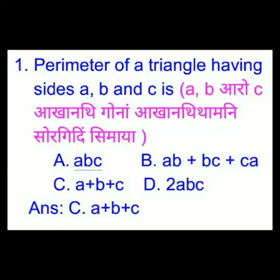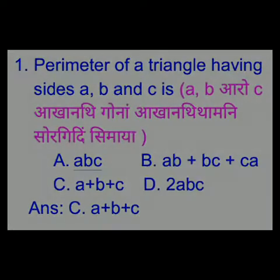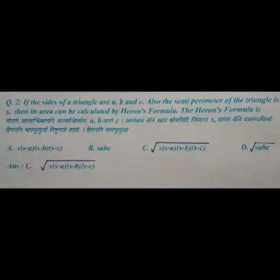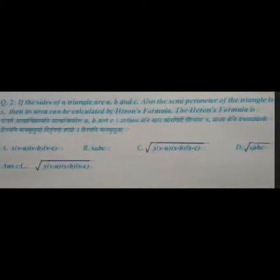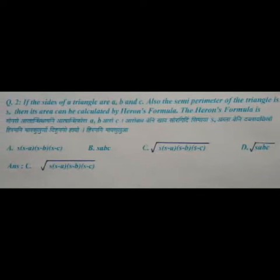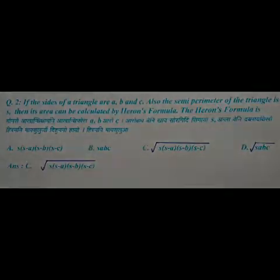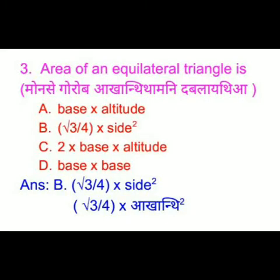If the sides of a triangle are A, B and C, and the semi-perimeter of the triangle is S, then the area can be calculated by Heron's formula. Heron's formula is option C: root over S(S minus A)(S minus B)(S minus C).